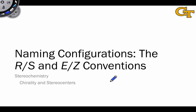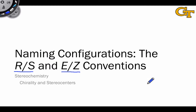Because the configuration of groups around a stereocenter is an important aspect of organic structure, we want a way to be able to name configurations. In this video we're going to cover two naming conventions for configurations about tetrahedral and trigonal stereocenters: the RS and EZ conventions.